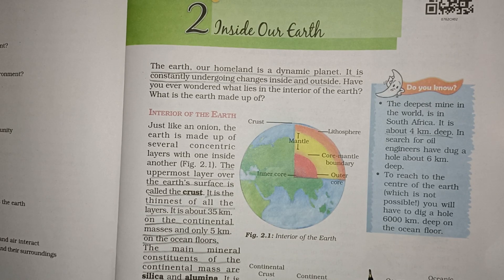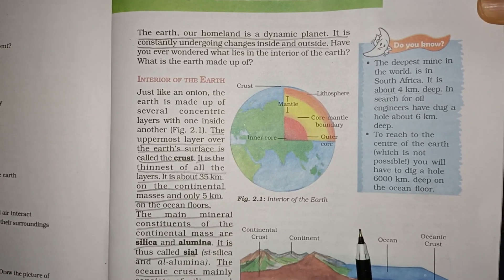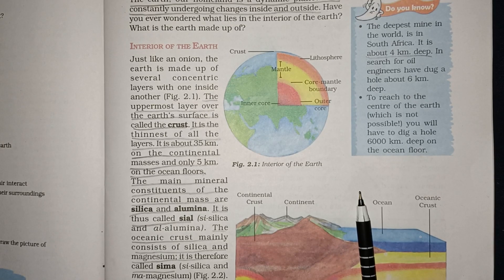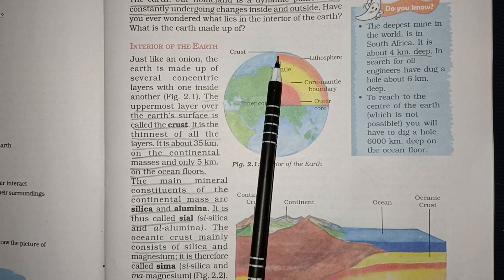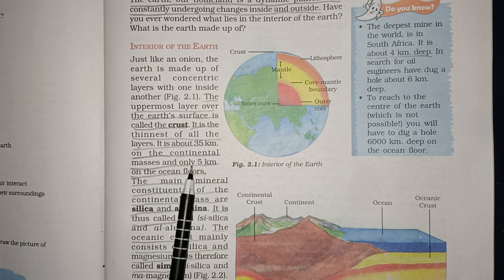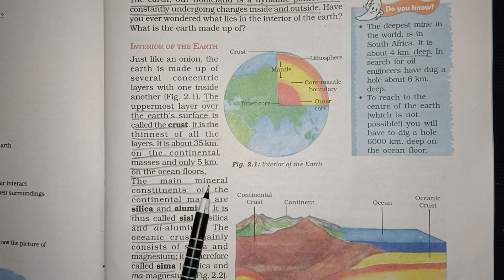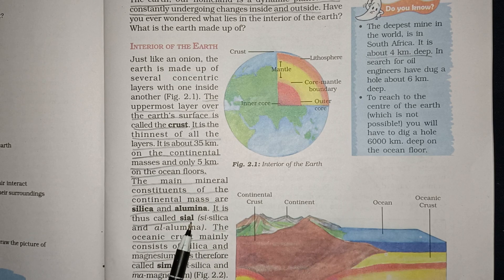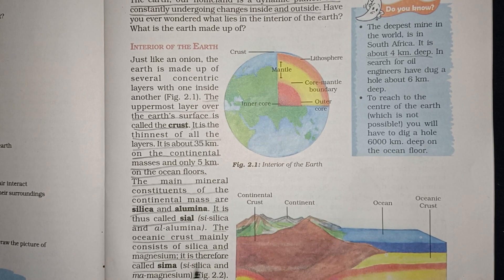Interior of the Earth: just like an onion, the Earth is made up of several concentric layers with one inside another. The uppermost layer over the Earth's surface is called the crust. It is the thinnest of all the layers — about 35 km on the continental masses and only 5 km on the ocean floors. The main mineral constituents of the continental mass are silica and alumina, so it is called SIAL (SI-silica, AL-alumina). The oceanic crust mainly consists of silica and magnesium, so it is called SIMA (SI-silica, MA-magnesium).